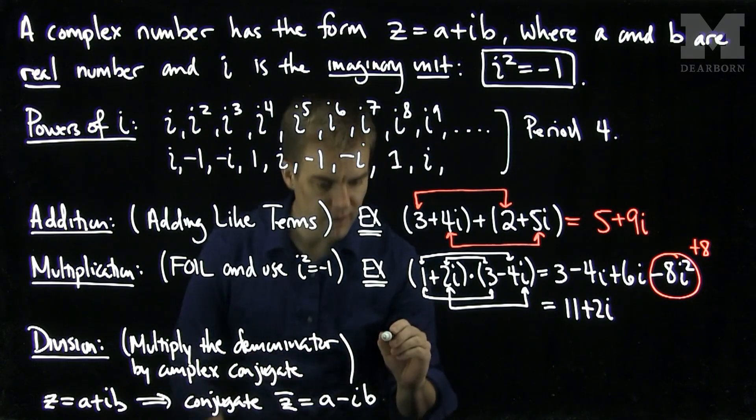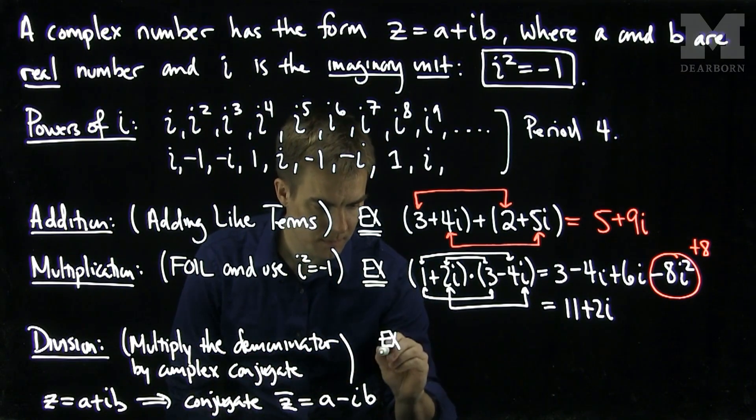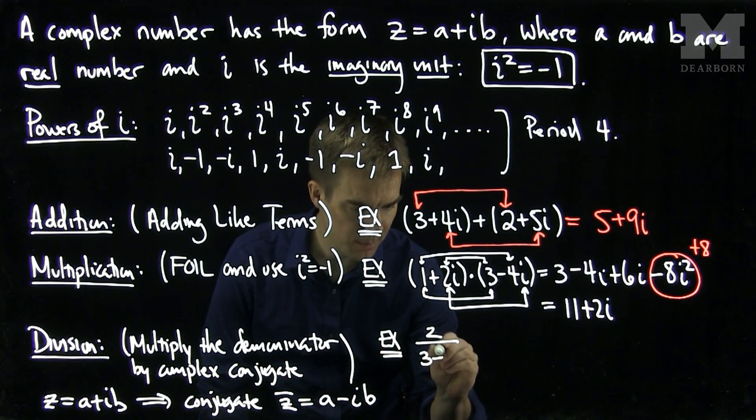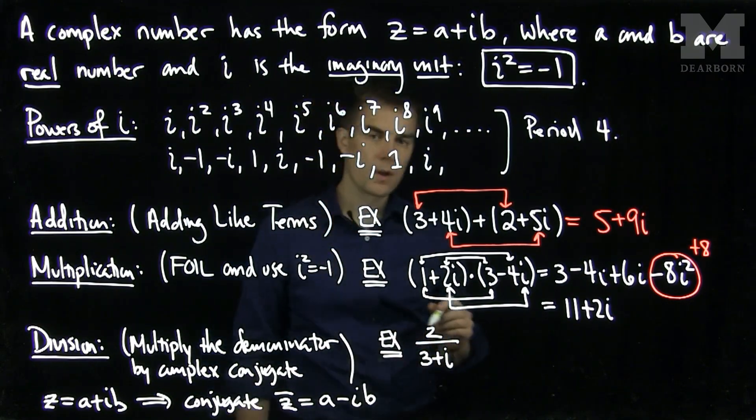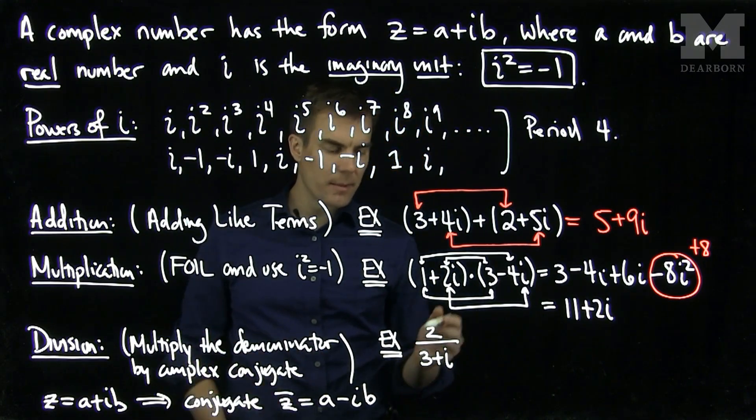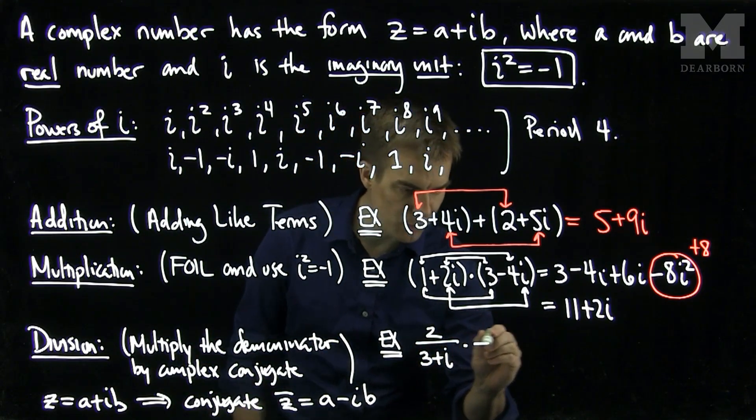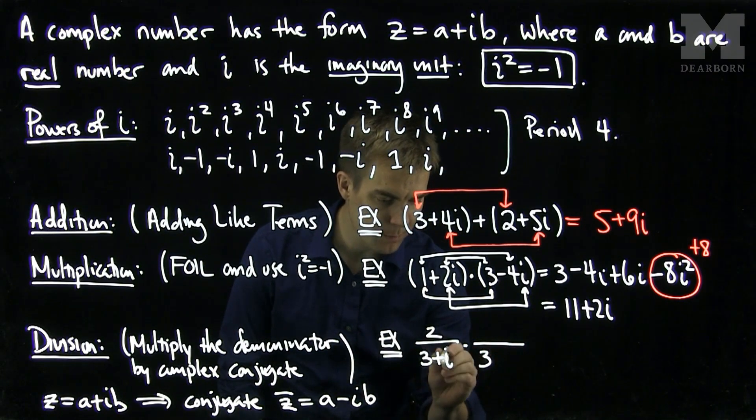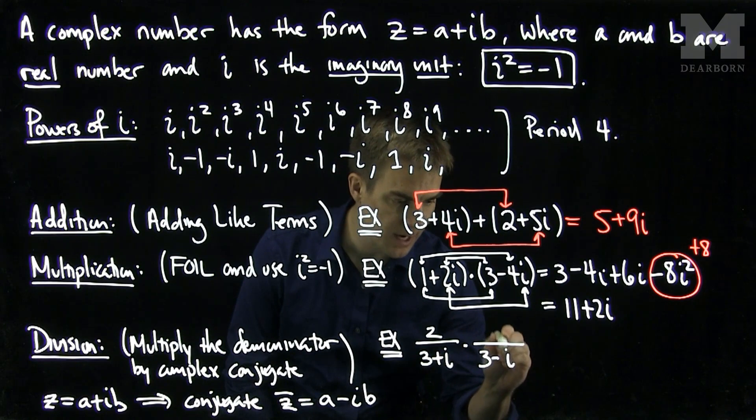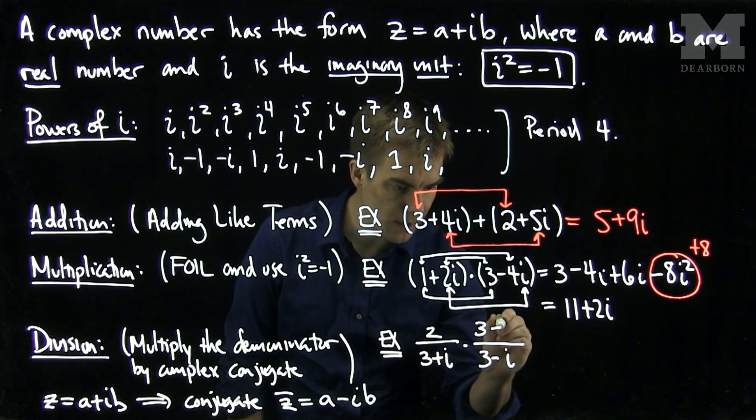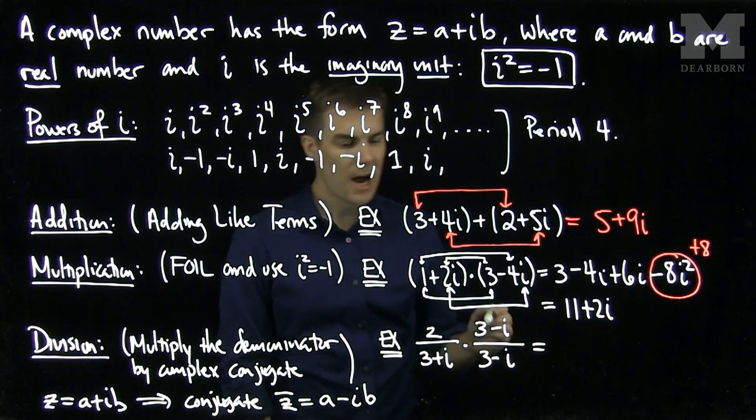So let's see an example of dividing complex numbers. Let's find 2 over 3 plus i. To find 2 over 3 plus i, we will multiply the denominator by the complex conjugate. And multiply the numerator by the complex conjugate. So the complex conjugate of 3 plus i is 3 minus i. We take the coefficient of i and make it negative 3 minus i. Now we'll multiply.